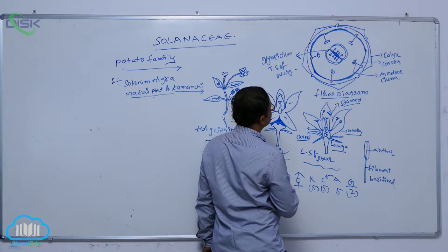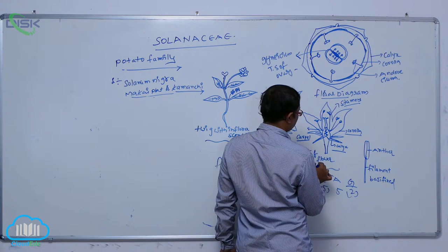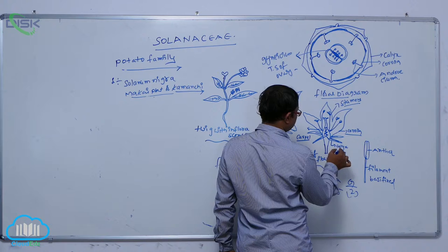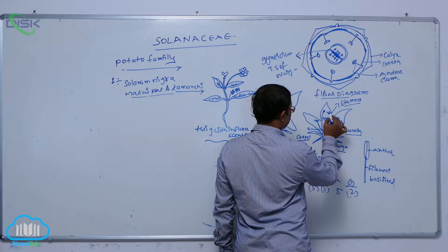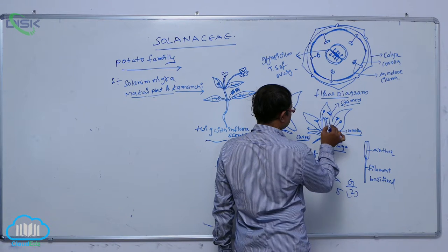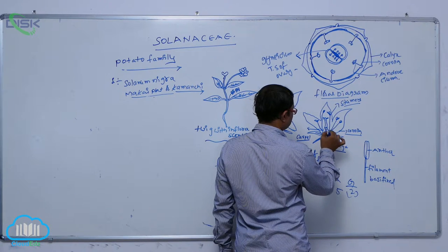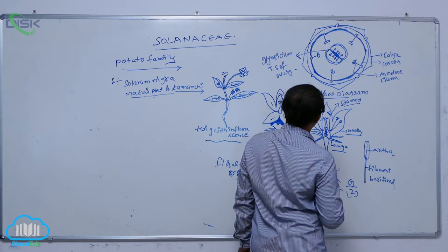So it is that flower. After that, in the LS of flower. So that is known as the calyx, corolla, andricium. After that, gynecium part. So it is known as that swollen placenta.